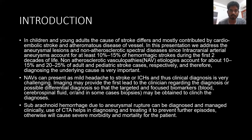In children and young adults, most strokes are due to cardioembolic stroke and arteritis diseases, which is a bit less than in the older age group. In this presentation, I will talk only about aneurysmal lesions and aneurysmal diseases causing stroke. Aneurysmal aneurysm accounts for around 10-15% of hemorrhagic strokes, and aneurysmal diseases account for about 10-15% in adults and 20-25% in pediatric patients.